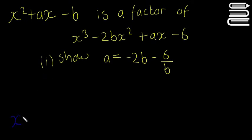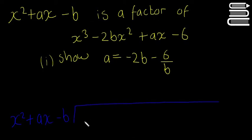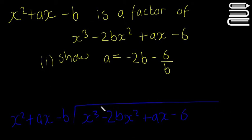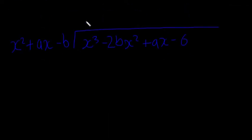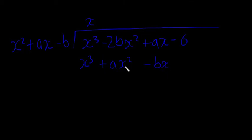So I'm going to write x squared plus ax minus b, and divide that into x cubed minus 2bx squared plus ax minus 6. So x squared into x cubed is going to give us x, and multiplying x by each term here we're going to get x cubed plus ax squared minus bx.